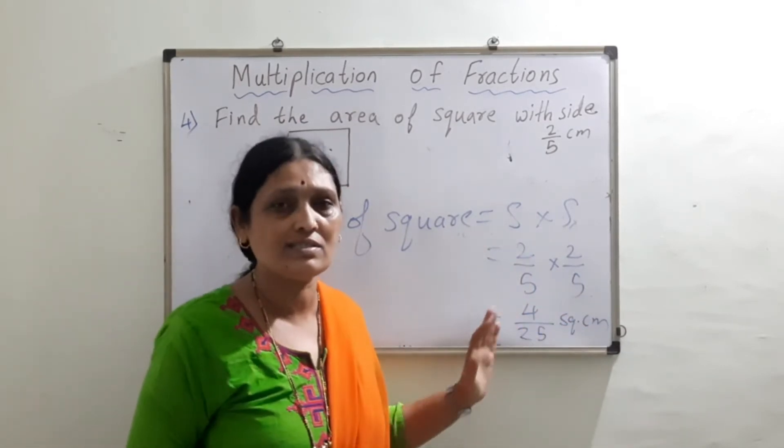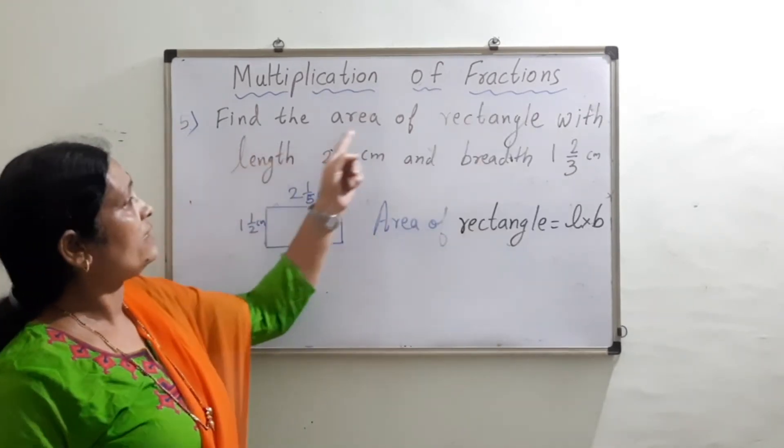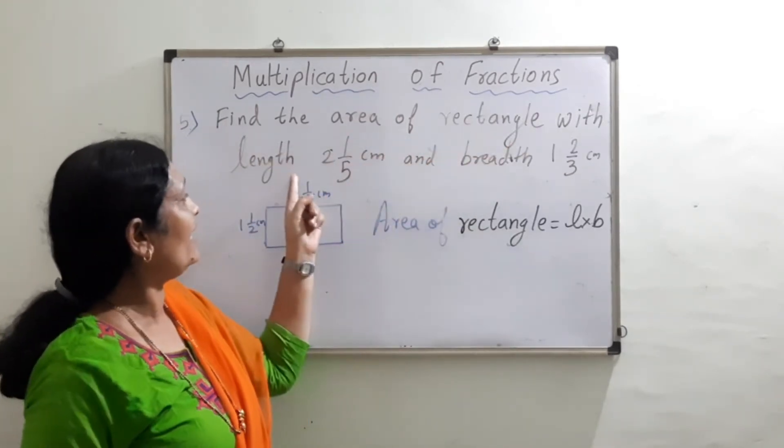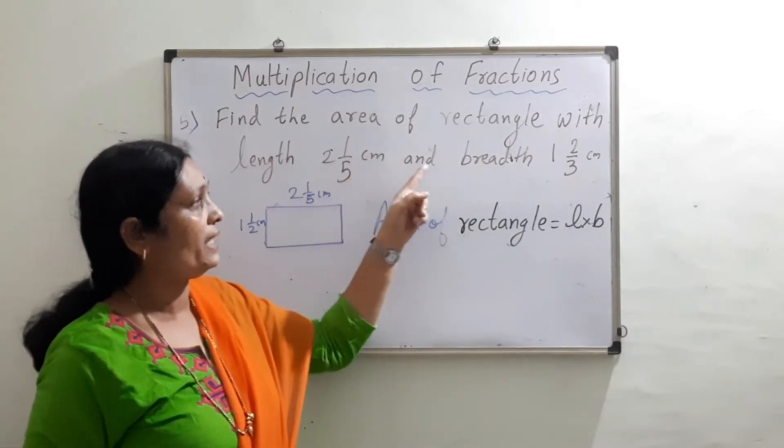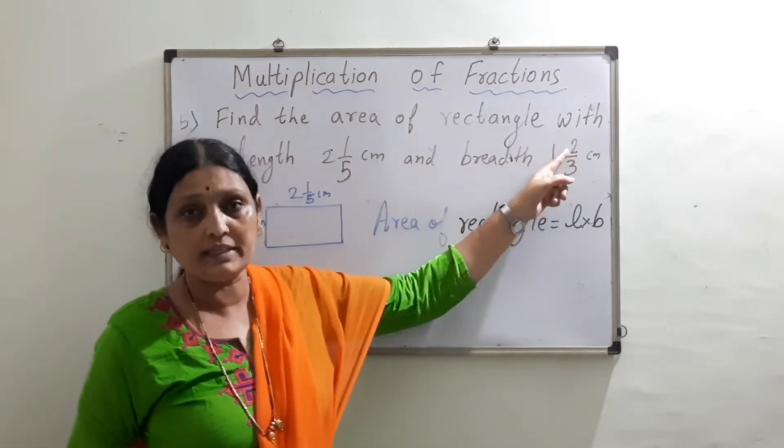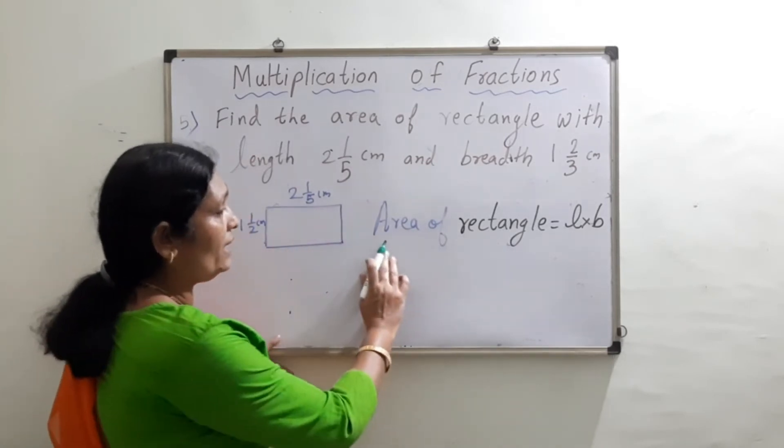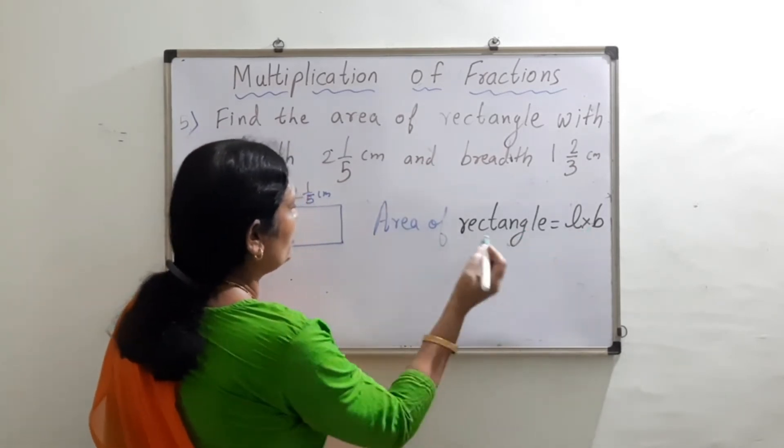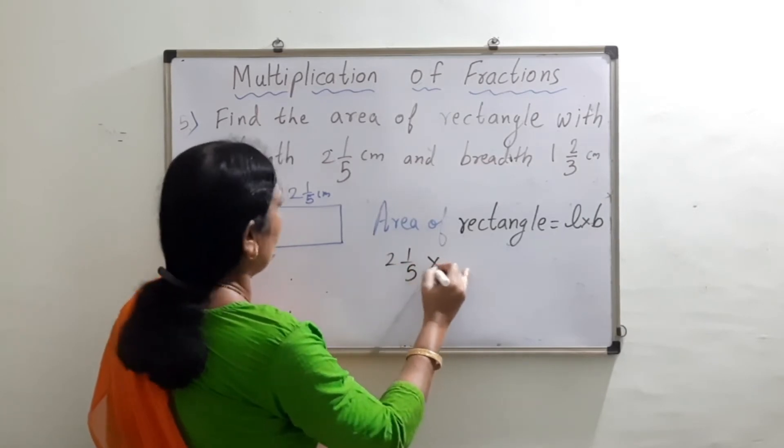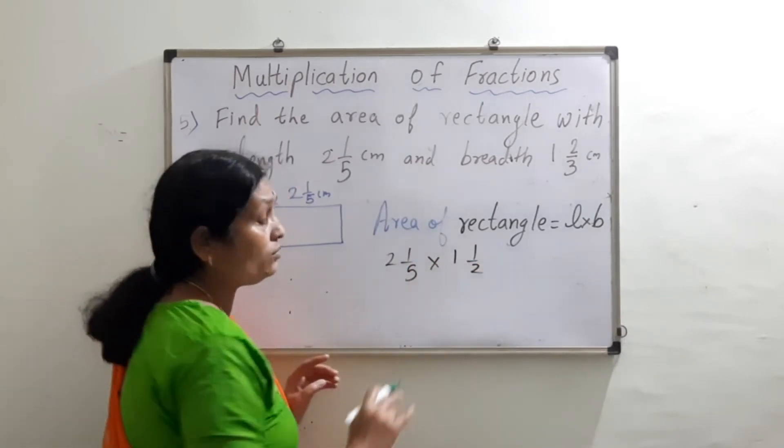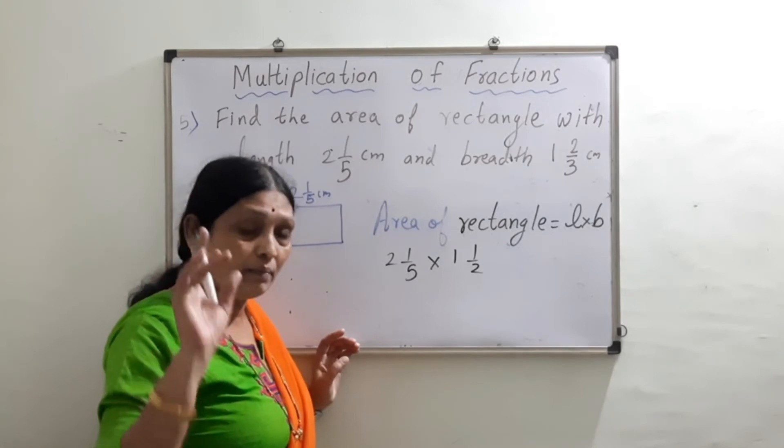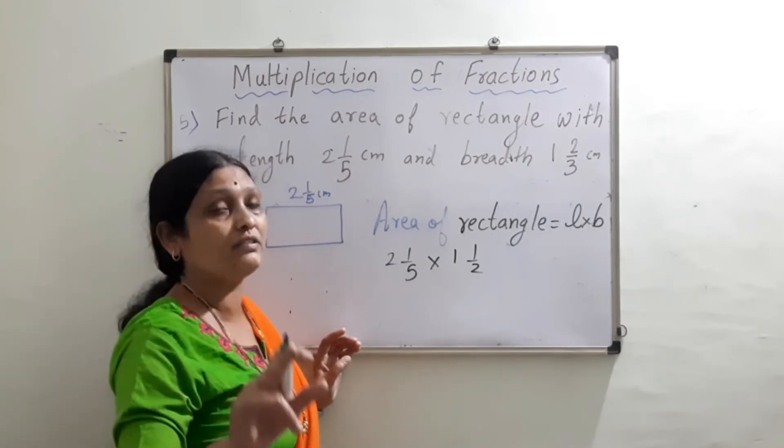Now find the area of rectangle with length 2 and 1 by 5 centimeter and breadth 1 and 2 by 3 centimeter. These are mixed fractions. We know that area of rectangle is length into breadth, so let us multiply. 2 and 1 by 5 into 1 and 1 by 2. Now these are mixed fractions, so it is important to convert them into improper fractions first.